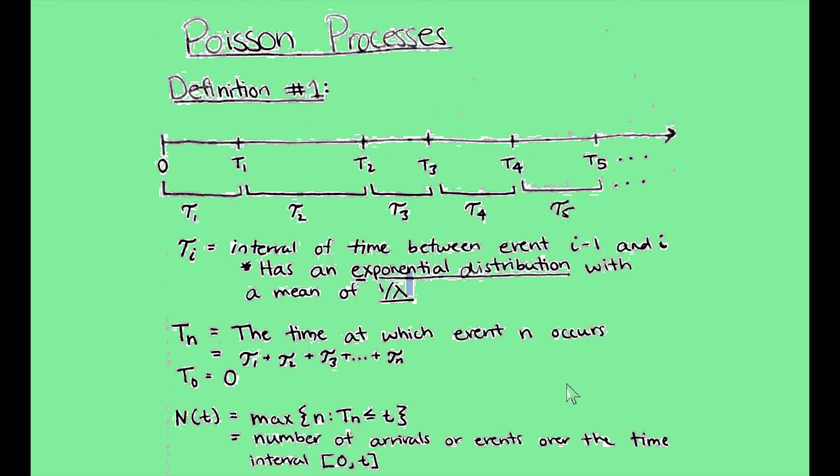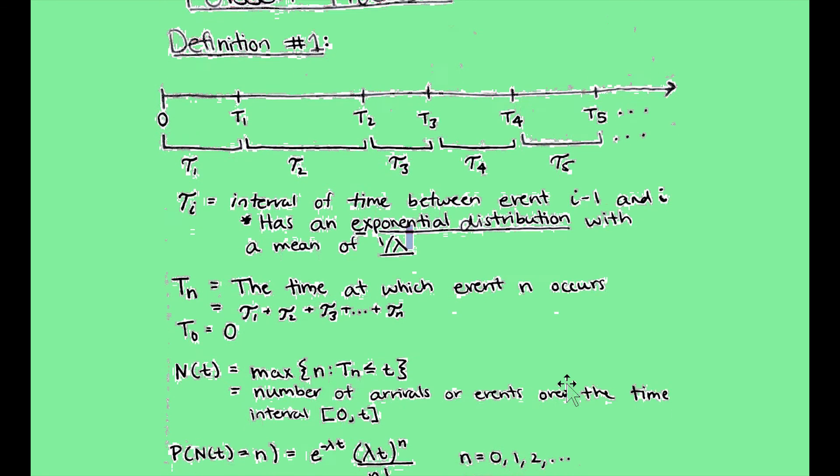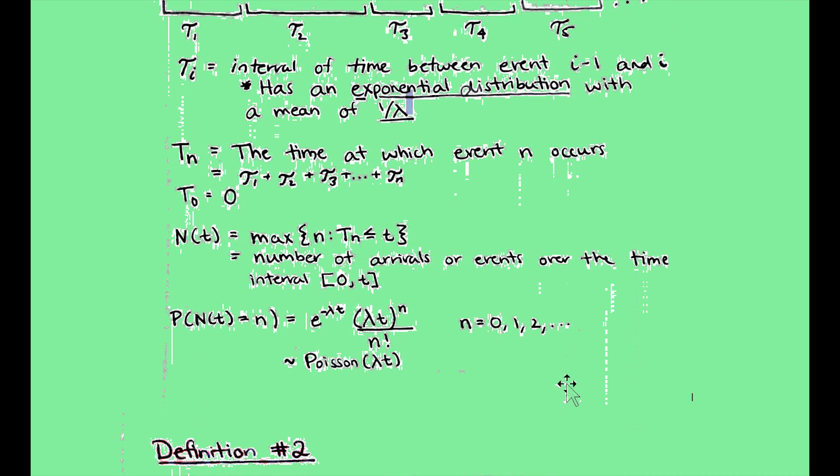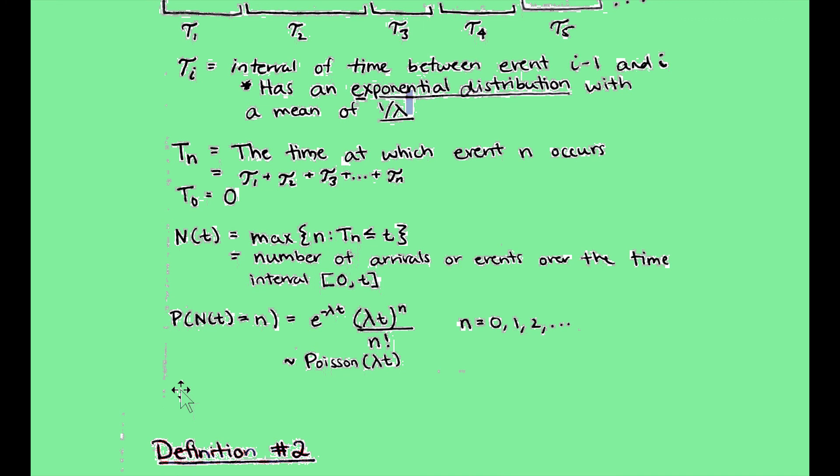So now we're going to get into why this is called a Poisson process. And we're revealing that actually, this N(t) value follows a Poisson distribution with a mean lambda t, or a rate lambda t. So that basically sums up what a Poisson process is. Hopefully that makes sense. But if it doesn't, we're also going to look at it from a different perspective with my second definition.